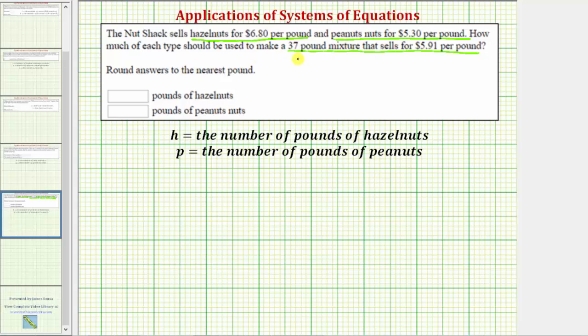Because the mixture will be 37 pounds, we know that h plus p must equal 37.